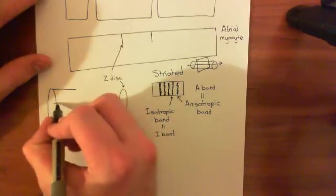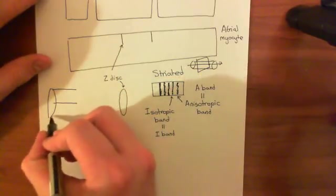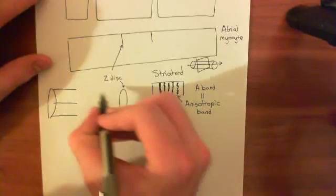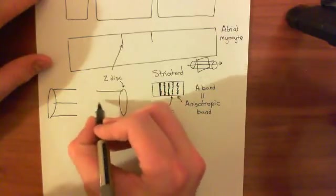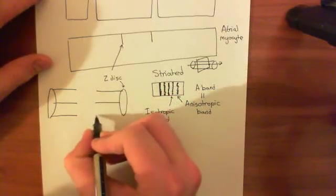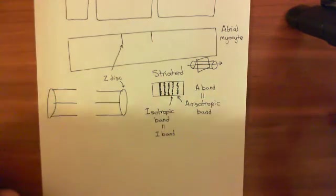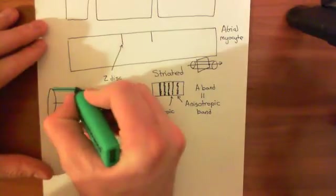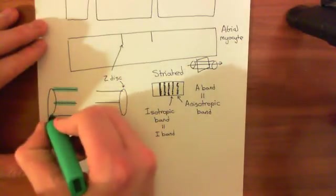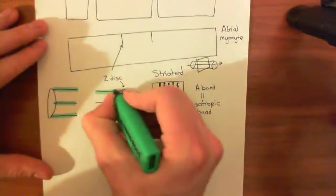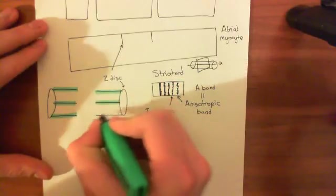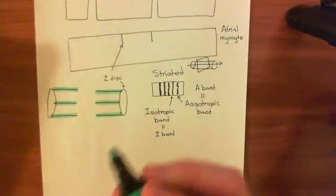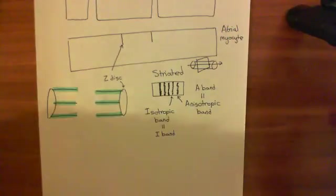Suspended from these Z-discs, what you have are protein filaments known as actin protein filaments. So here are our actin protein filaments suspended from our Z-discs. Let me add some colour on this. These here in bright green are the actin filaments. And we'll continue this discussion in the next video.